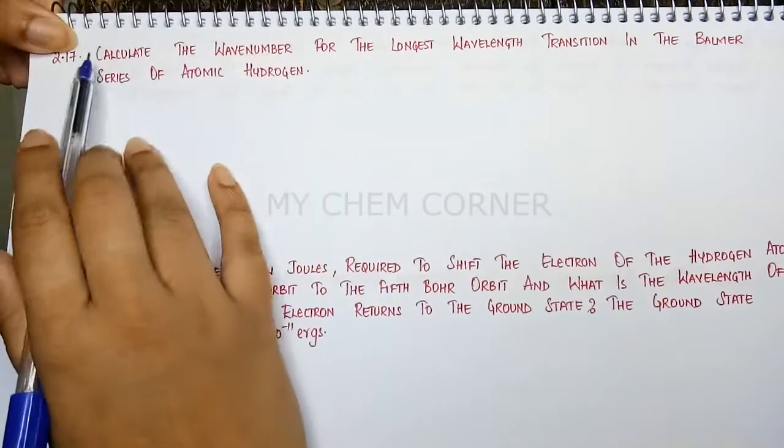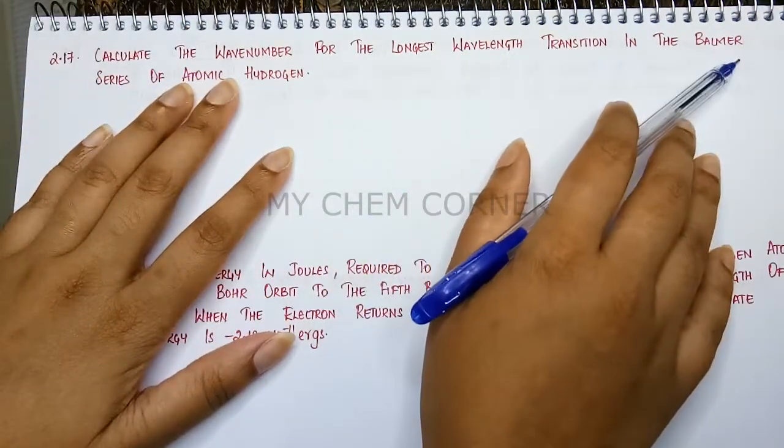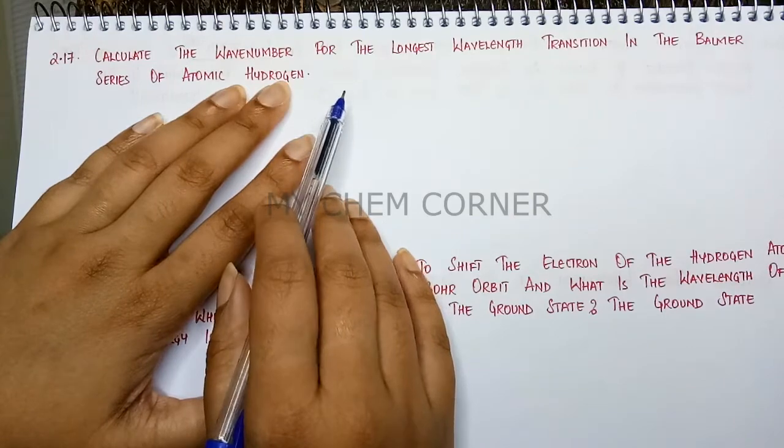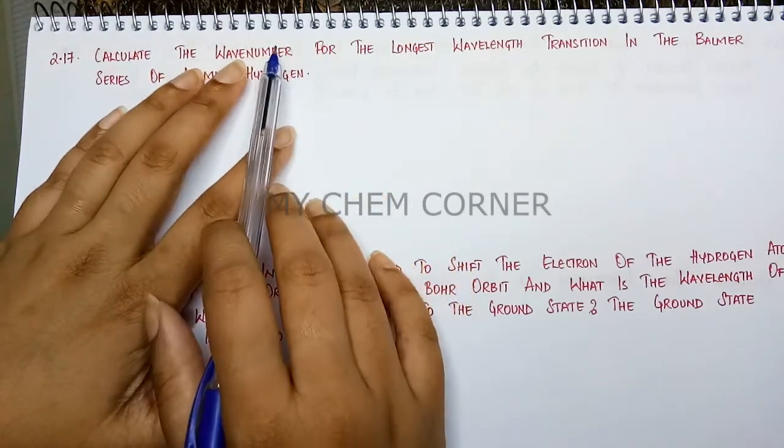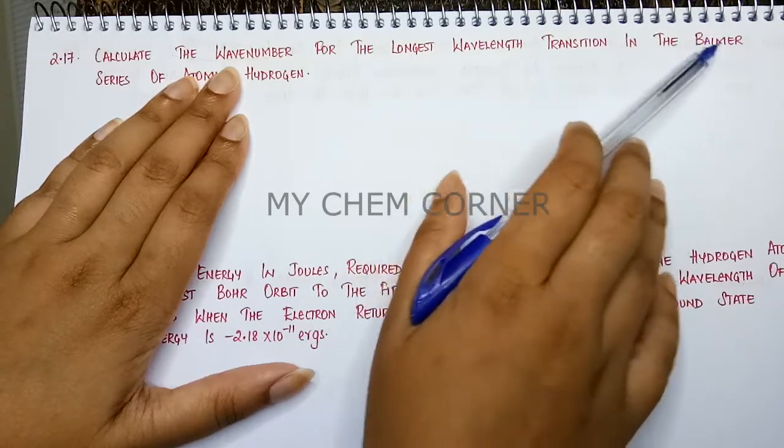Next one is question number 2.17. Calculate the wave number for the longest wavelength transition in the Balmer series of atomic hydrogen. So here it says you need to calculate wave number for the longest wavelength in the Balmer series.